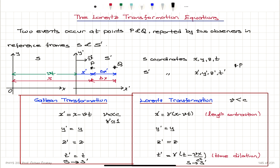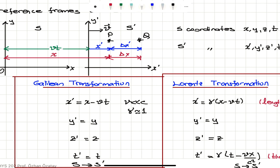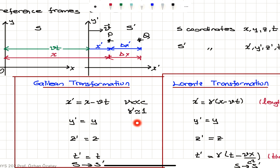Galilean transformation equations: we have Vt plus X prime equals X, so X prime would be X minus Vt. Y prime is Y, Z prime is Z. And time is absolute in the Galilean transformation, so the event is reported to be occurring at the same time by the two observers — T prime is T. This is valid when the speed V is much less than C and the relativistic correction factor is approximately equal to 1.